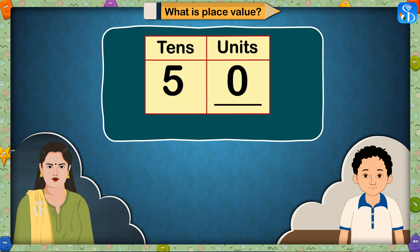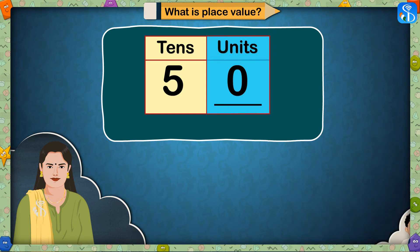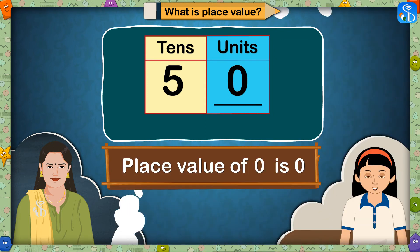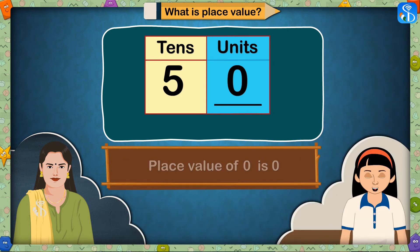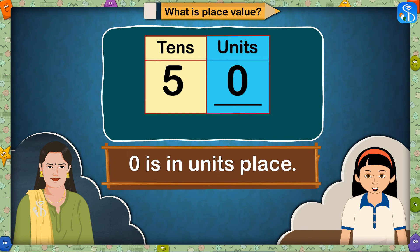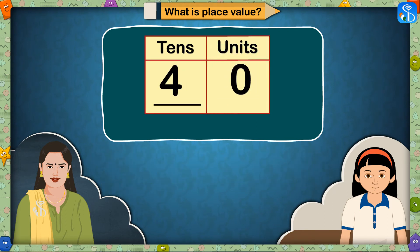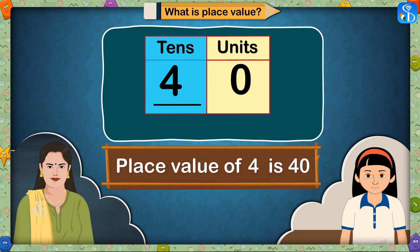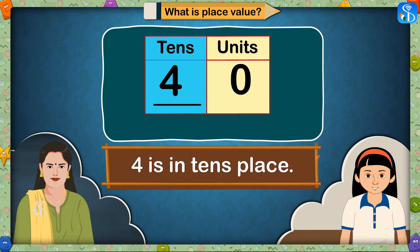Tell me the place value of 0 in 50. The place value of 0 is 0 only, as it is in units place. Tell me the place value of 4 in 40. The place value of 4 is 40, as 4 is in tens place.